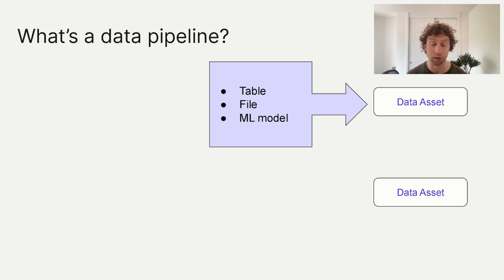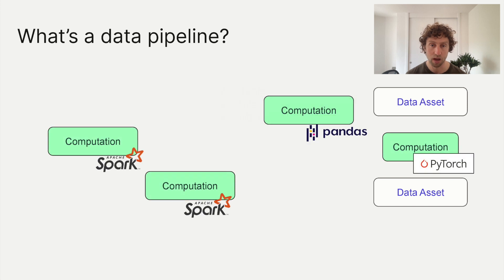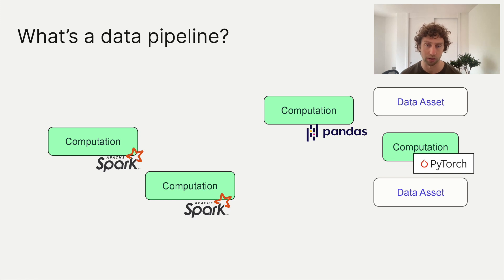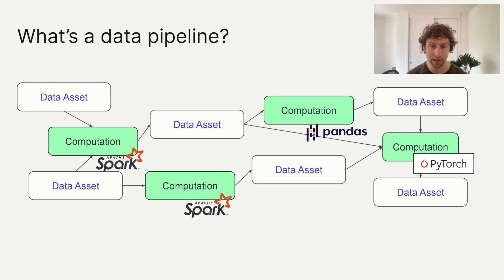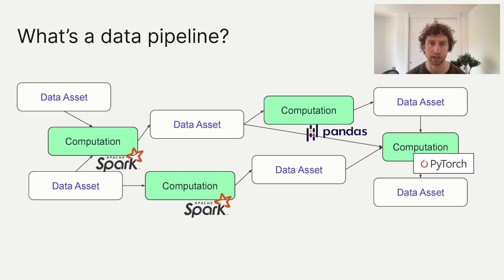To get to those assets, you're normally going to need to run some computations — pull data from external systems, run a Spark job, do some pandas transformations, train a PyTorch model, you name it. Those computations are usually going to consume and produce other data assets, which might be source data or might capture some intermediate stage of the data transformation process.